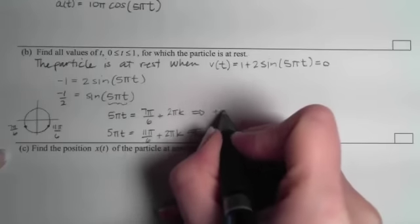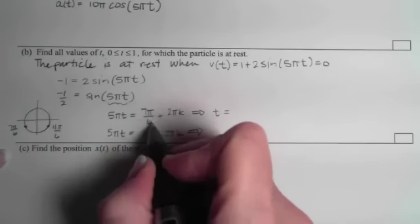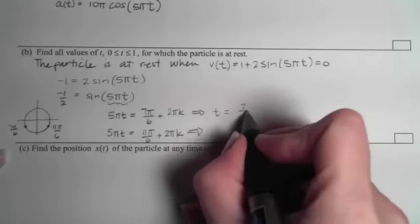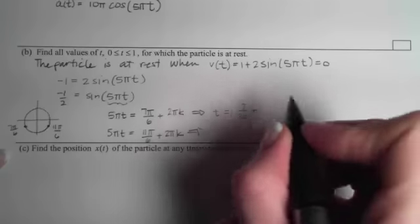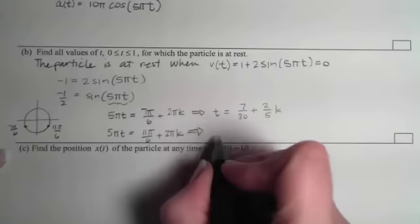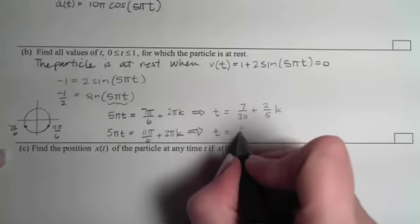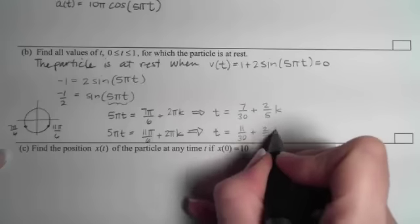In order to solve for t we divide by 5π on each. That gives us t = 7π/30π, which is 7/30, plus 2π/5π is 2 fifths times k. If we solve this one we get 11/30 plus 2 fifths k.